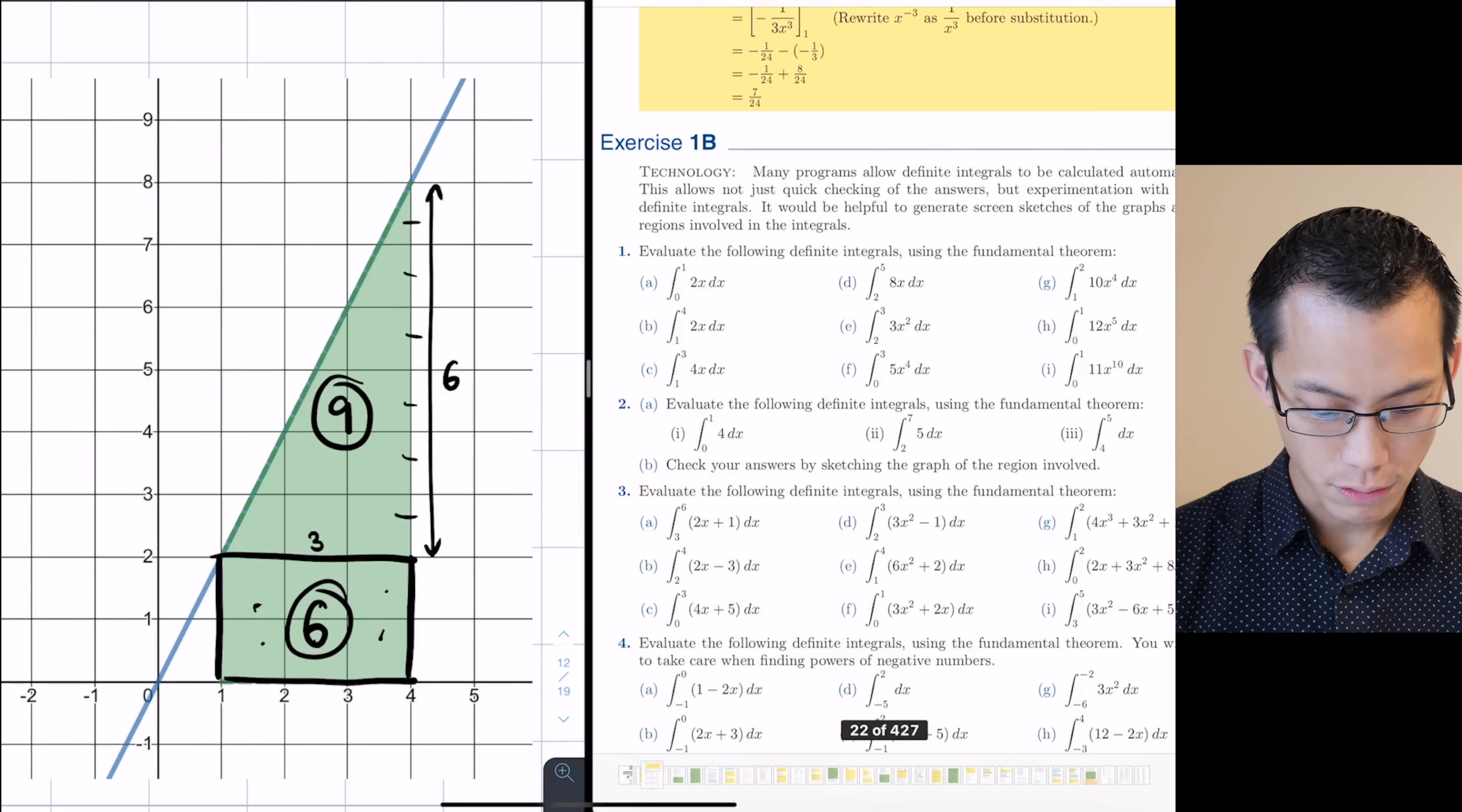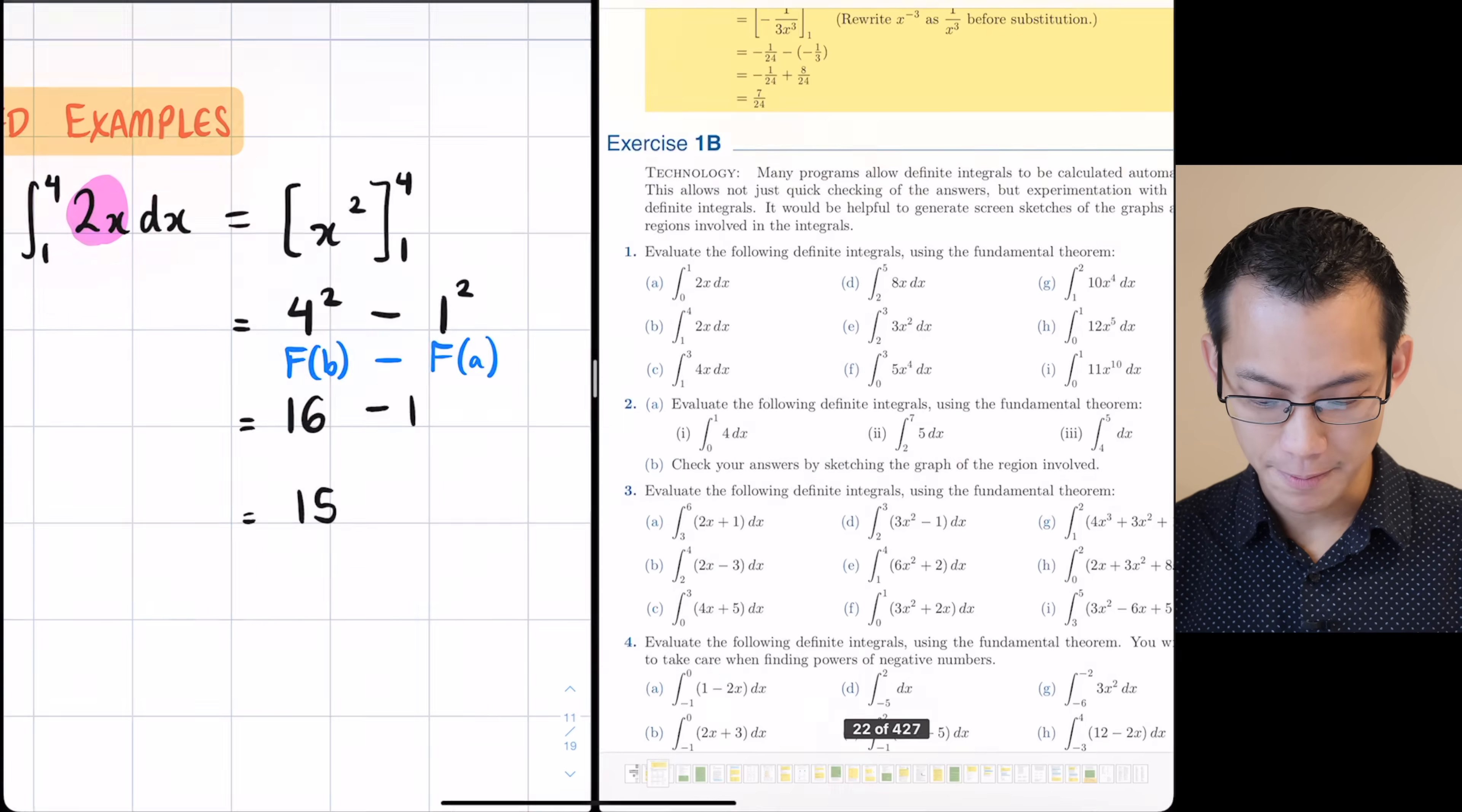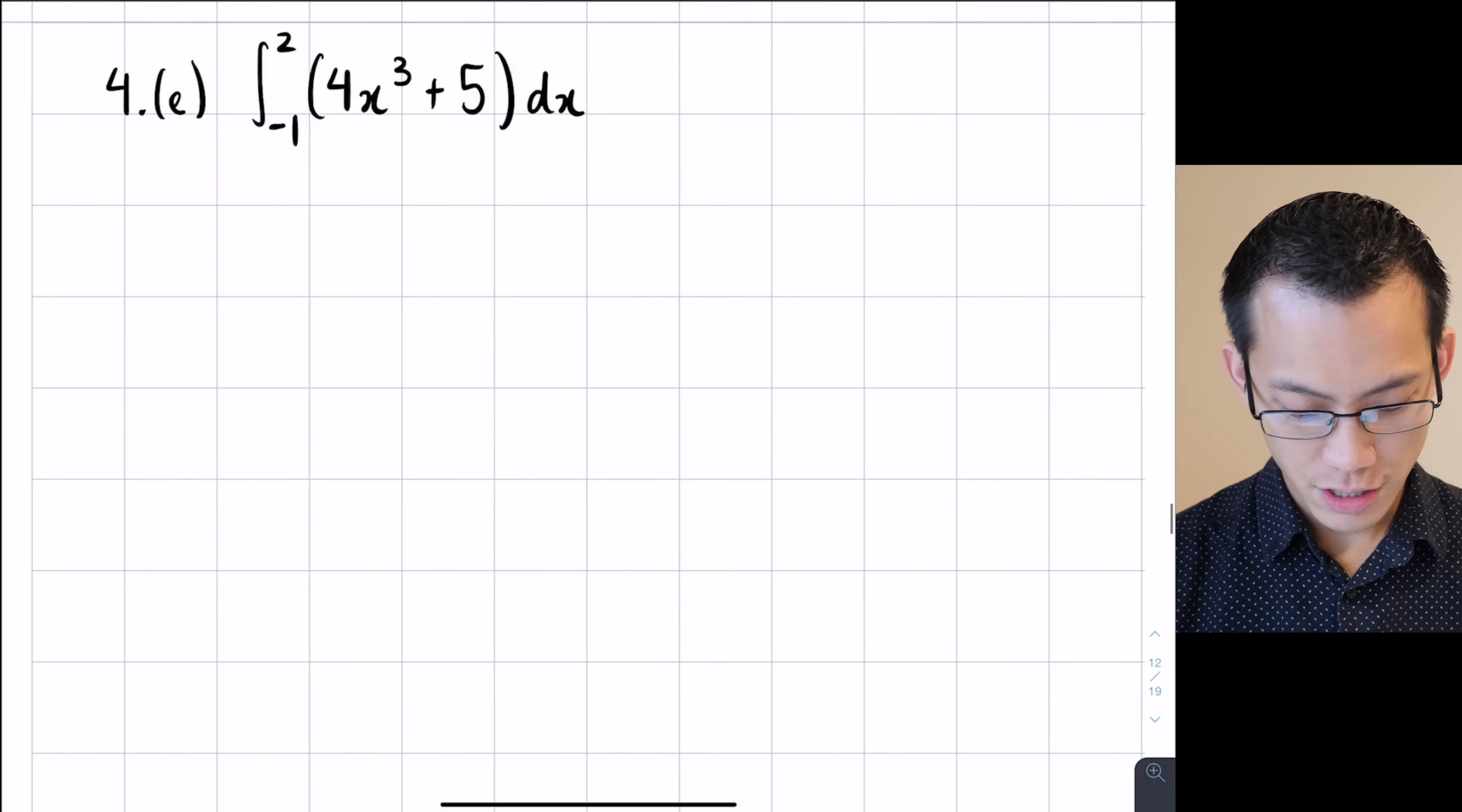But if I just come back to this original question now, this answer of 15 is not 15 units squared. It's not an area. Have a look at the question. It just says evaluate an integral. That's just a number. Often that number is useful to work out an area and we can use an area to help us work out the number. But the actual definite integral itself is just the number 15. So that's it. We're done. Now this guy here, I picked this one as an example because we could verify it very simply with an area.